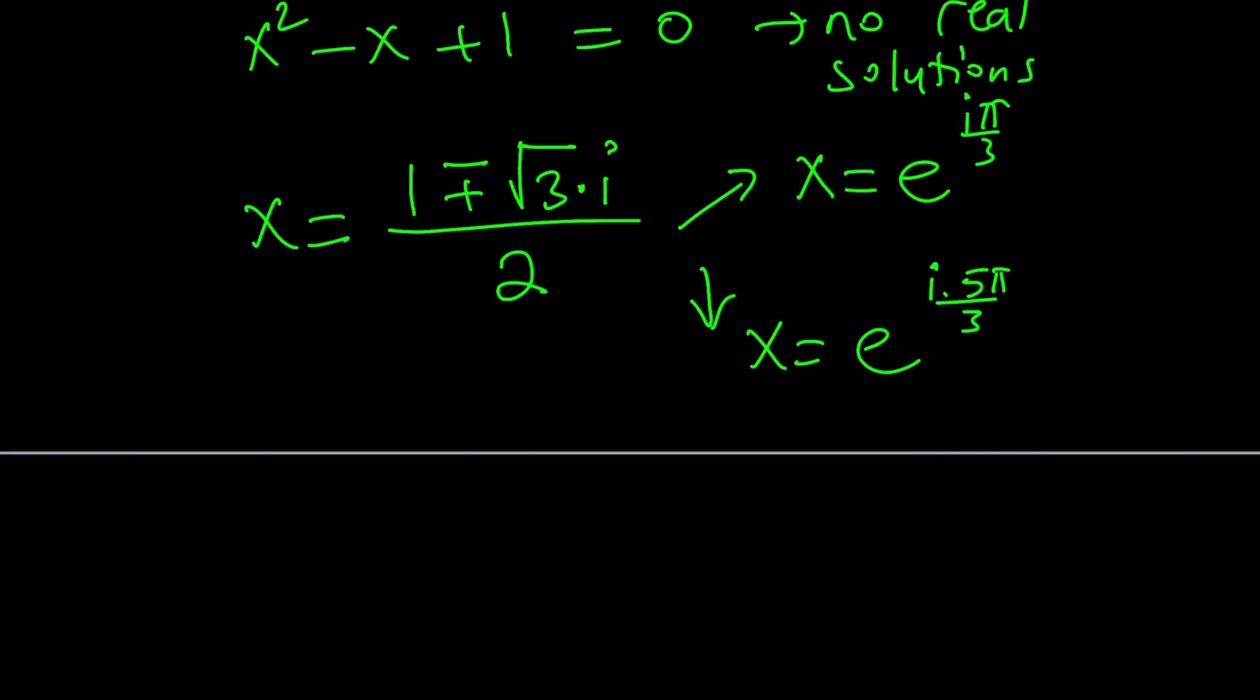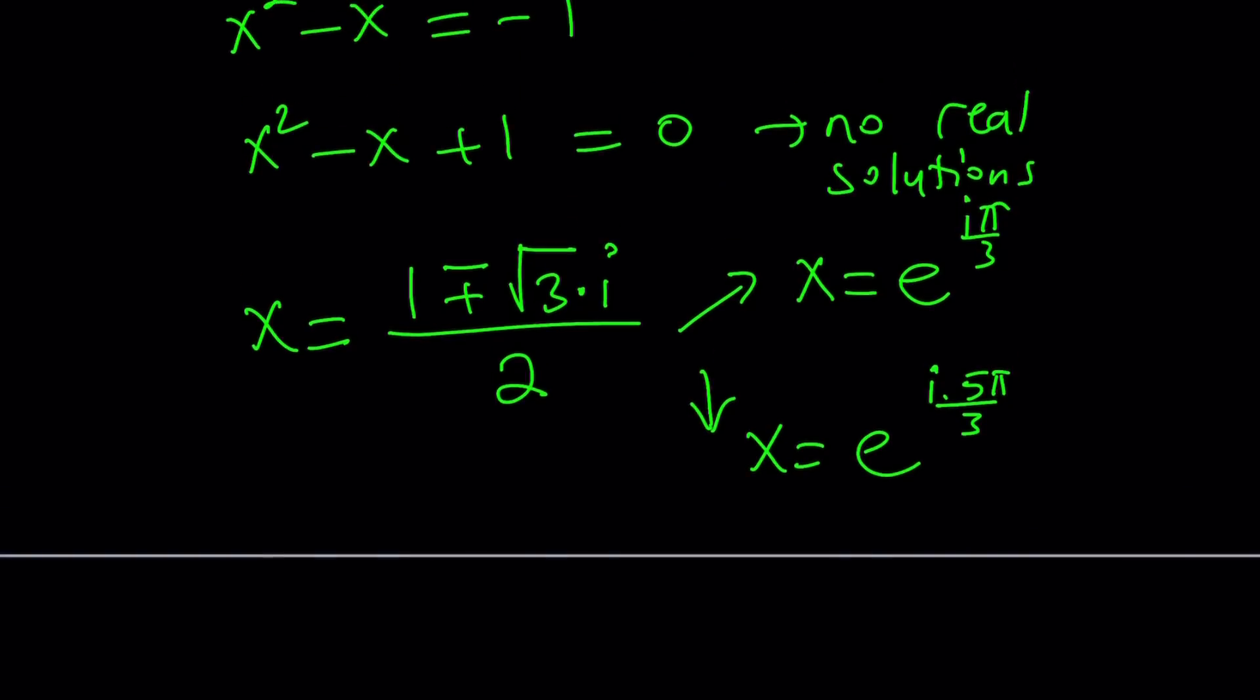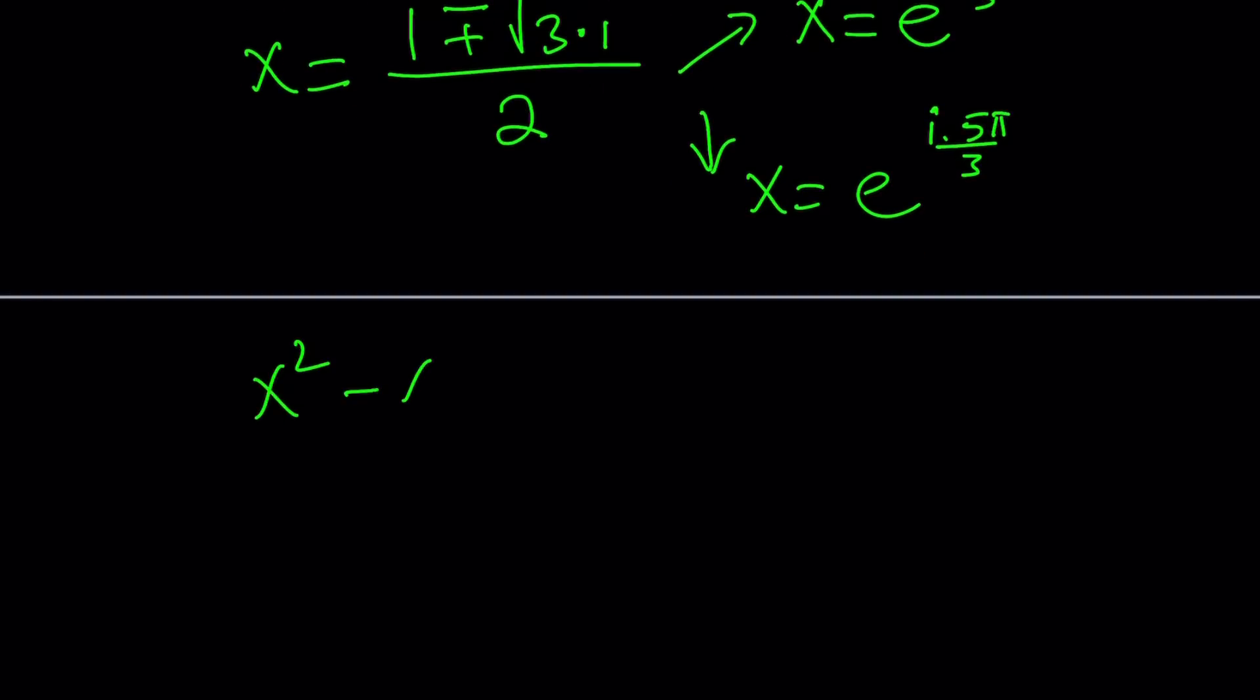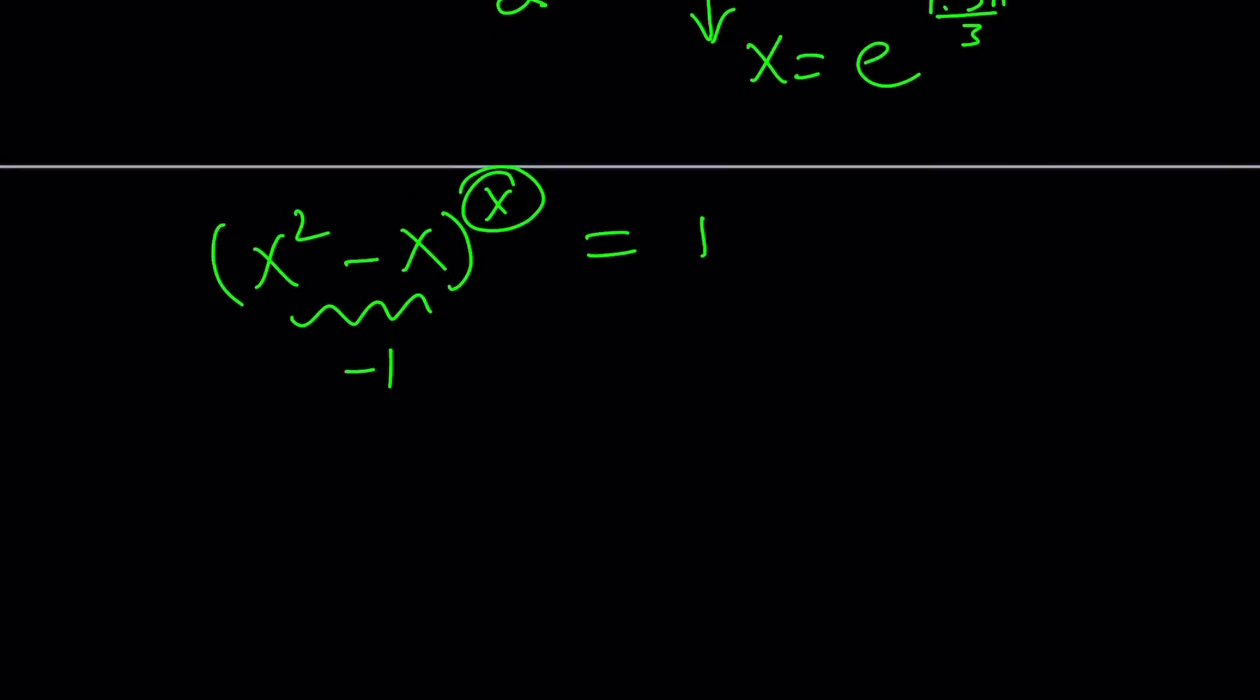Okay, so now we have these situations. So we assume that, what if the base is negative 1? So I have something like this now. If the base is negative 1, then x is going to be a complex number. So can we get something like negative 1 to the power e to the power i pi over 3 equals 1?